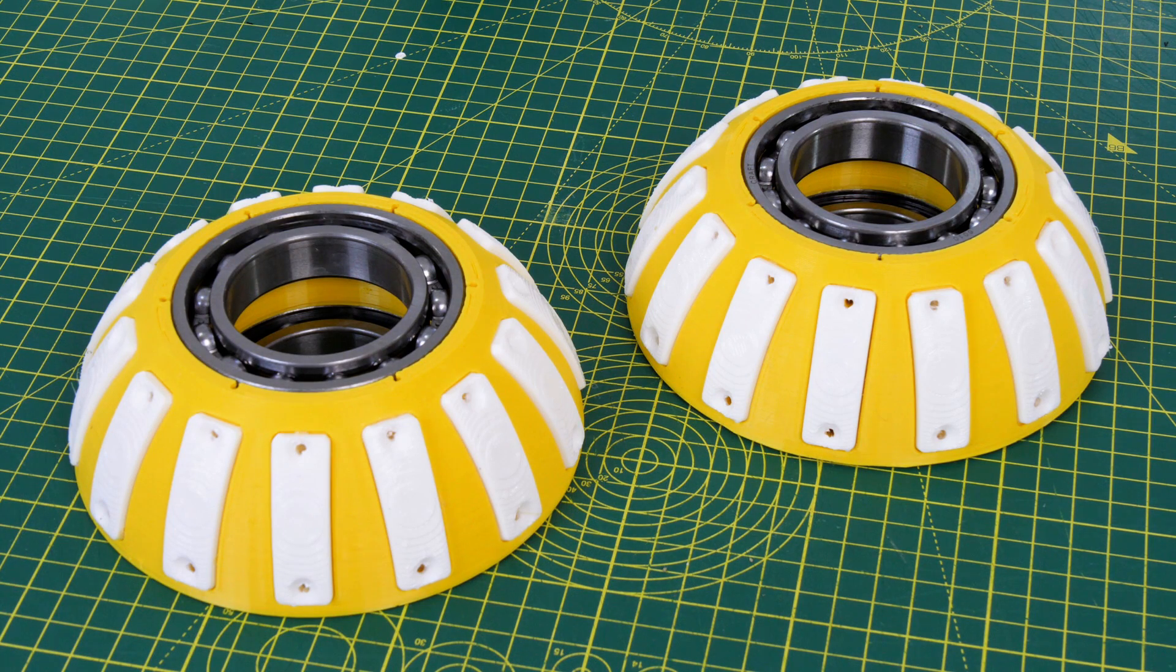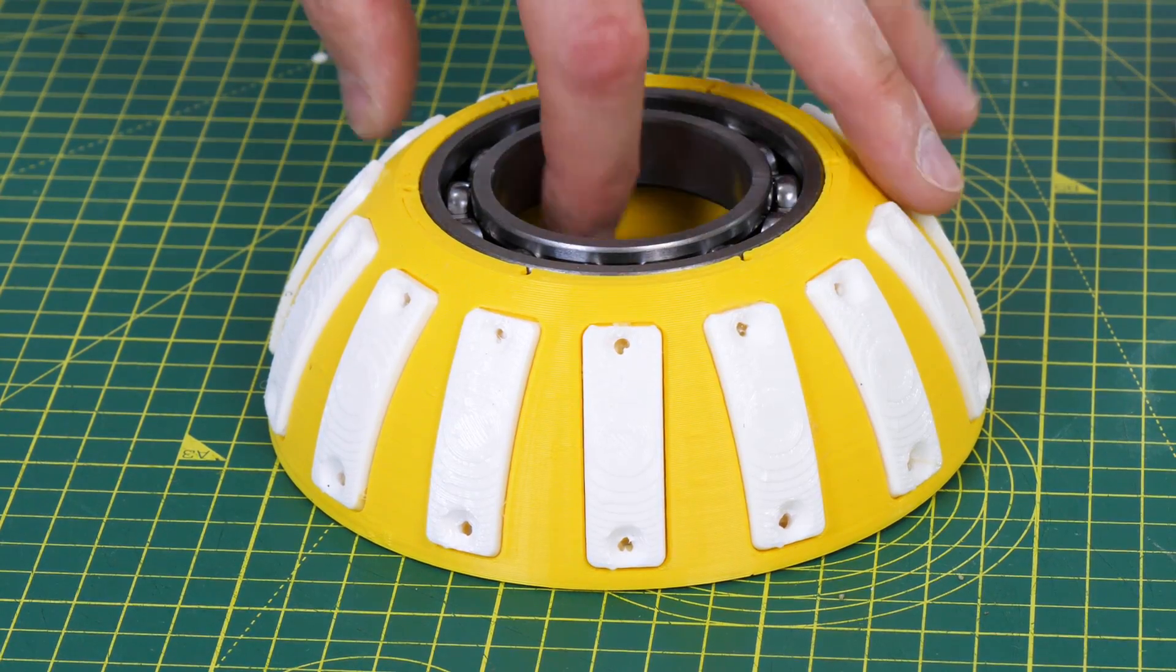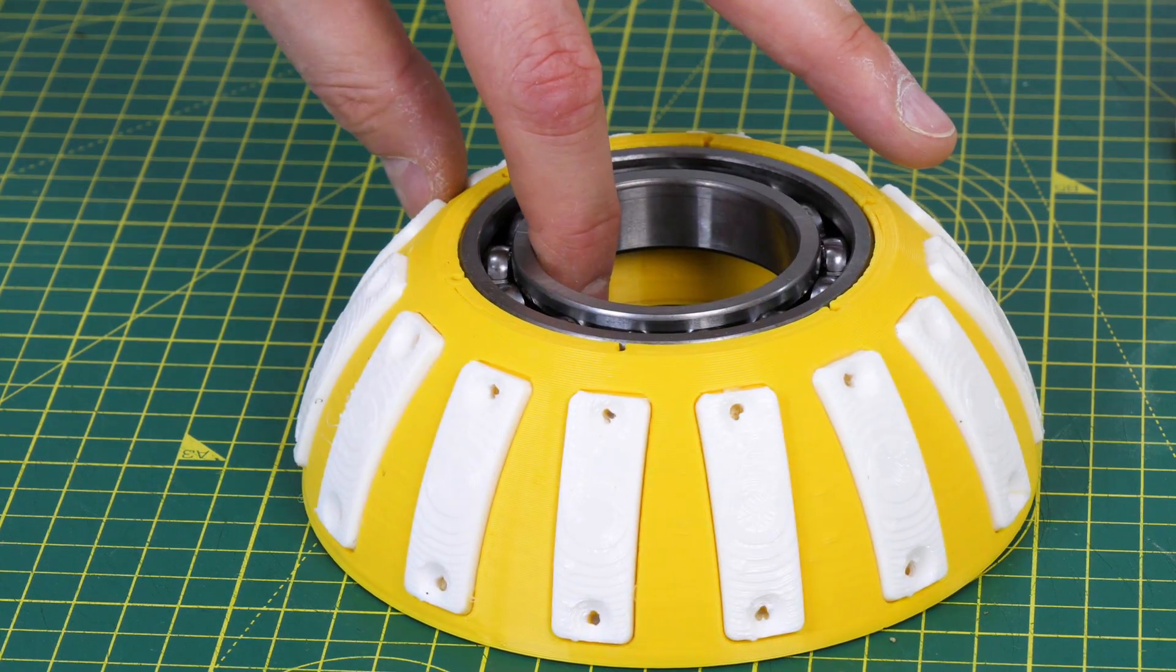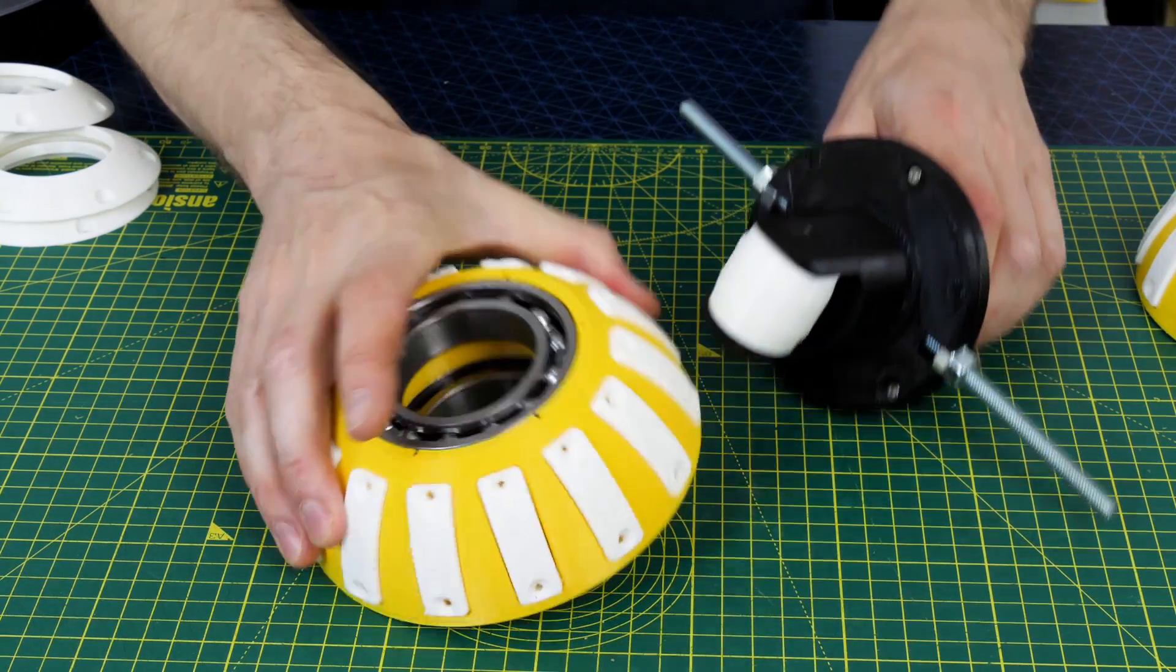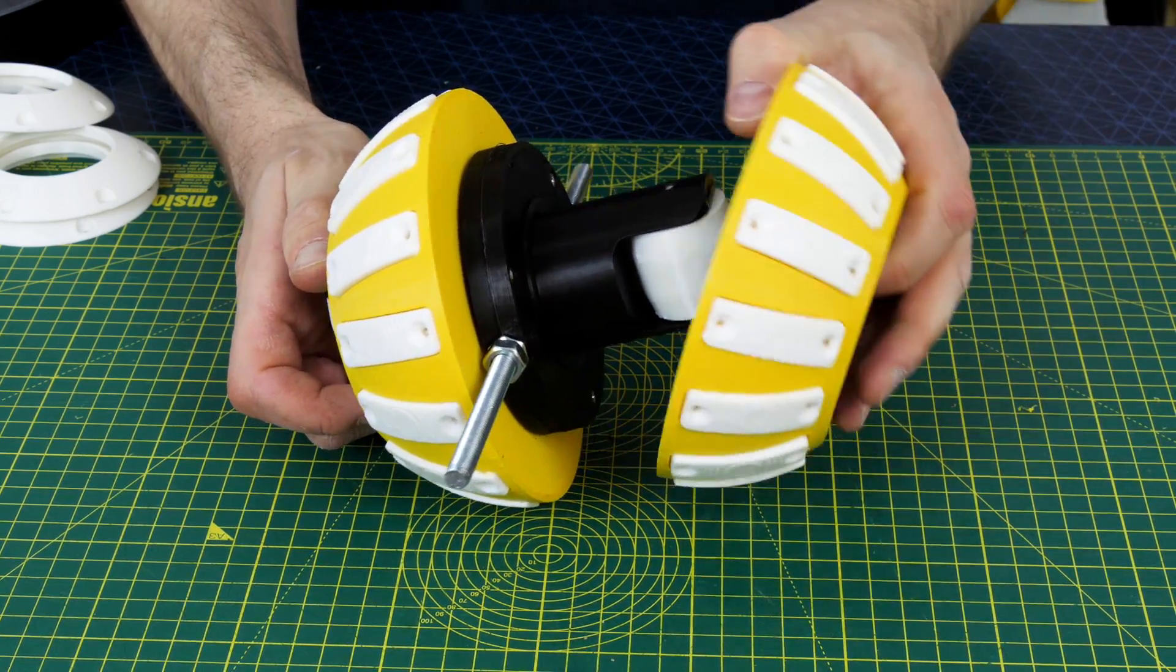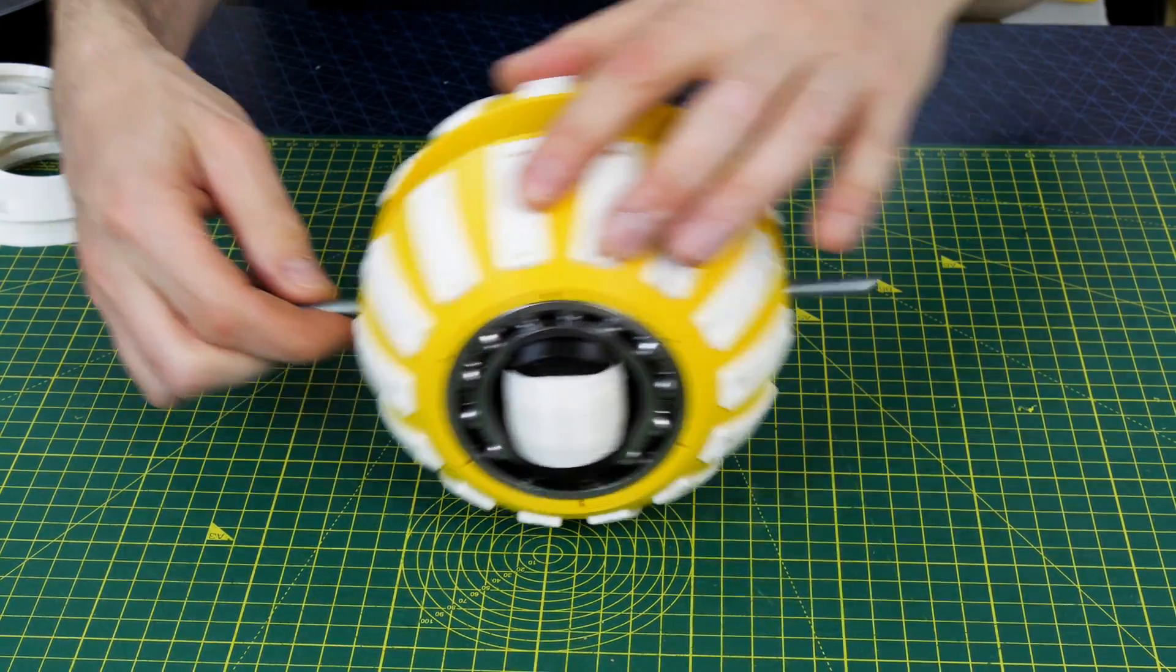I used contact adhesive to glue the TPU treads into the two hemispheres. I did allow screw holes but for now I'm going to rely on the glue and hopefully that should hold it, but we can always come back and put a lot of screws in if they get detached in use. And those hemispheres fit on either side of my perpendicular axle.